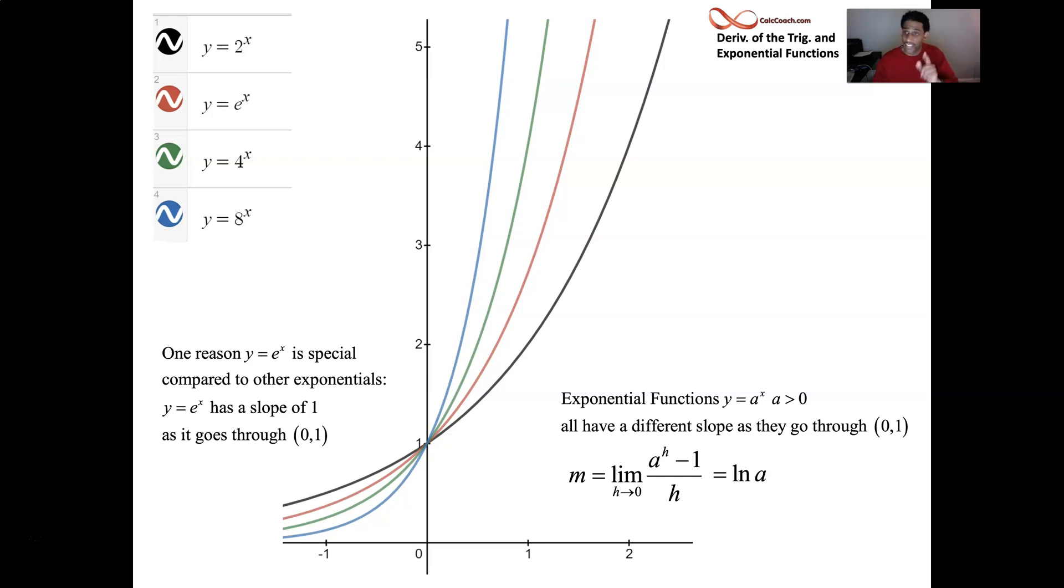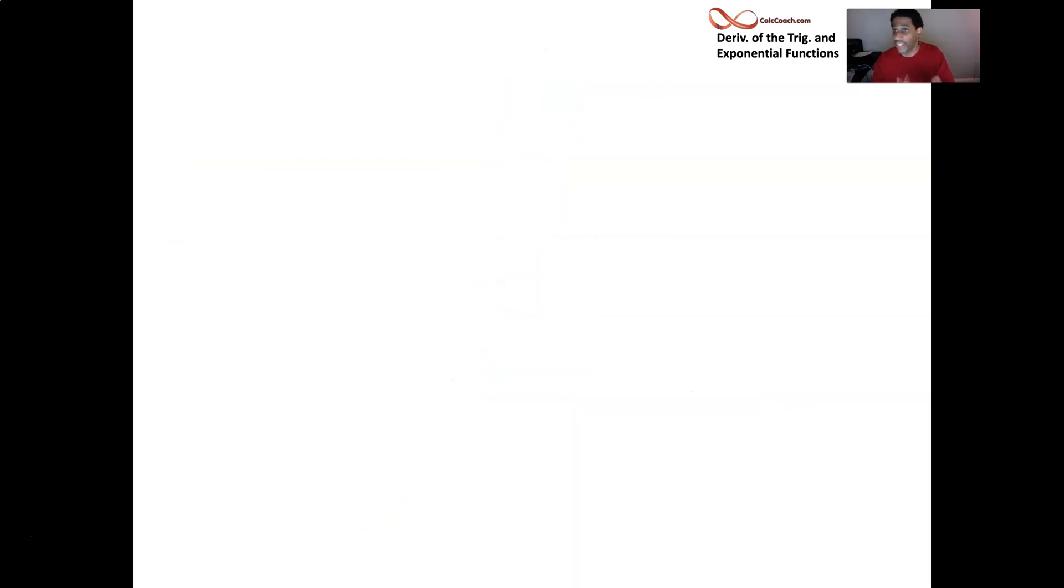All right, let's look at an example question now that we know that e to the x's derivative is e to the x. I just realized that that's e to the negative x and we have not learned the chain rule yet. That's okay, we can talk about it now, it's fine. The job in this question is to find the x values so that the derivative function is equal to zero. What x's make it equal to zero?